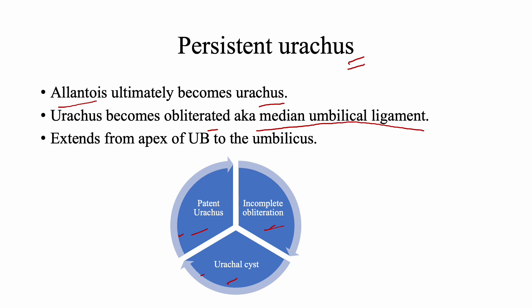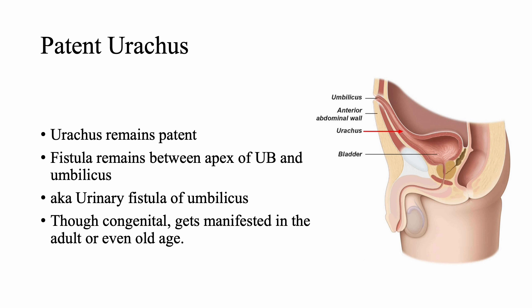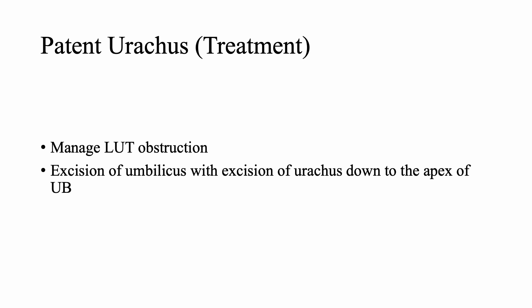Regarding urachal anomalies, there are three main types: patent urachus, incomplete obliteration, and urachal cyst. If both the umbilical end and the bladder end are obliterated but the middle portion remains patent, secretions accumulate to form a cyst-like structure — the urachal cyst.